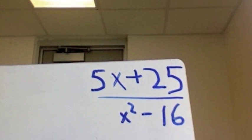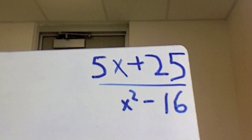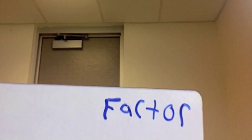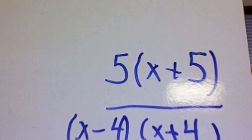This is our problem. You must check if you can factor. Here we can factor the 5x plus 25 into 5 open parenthesis, x plus 5 close parenthesis, and the x squared plus 16 into x plus 4 and x minus 4, both in individual parentheses. This is what you will get.